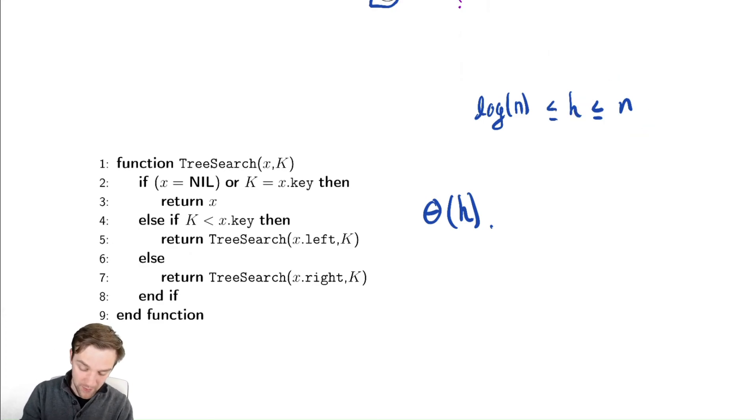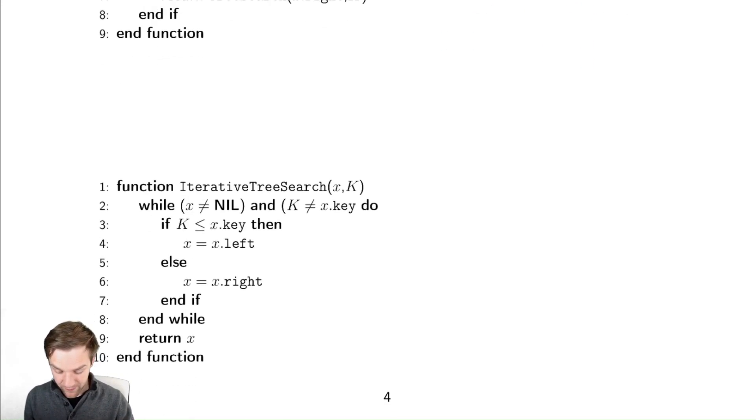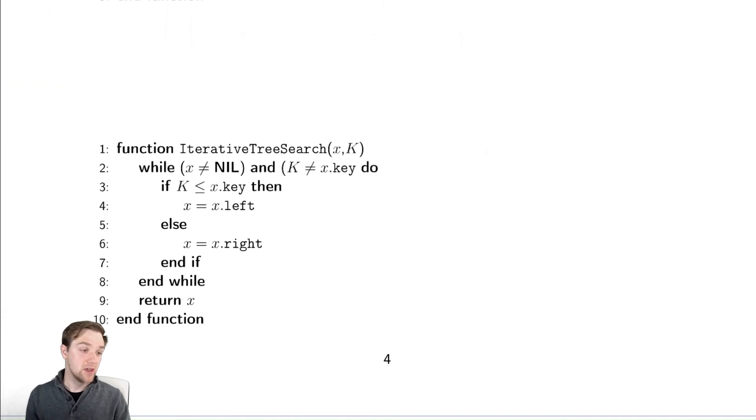Notice that this algorithm only ever makes one recursive call, so we could easily write it as a while loop. If you scroll down, we've done that here as well, and the exact same sort of analysis would work. We are always updating our value x to go to the left or the right, and we only return once we are nil or have found the value.